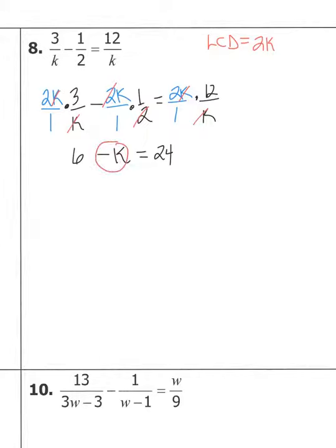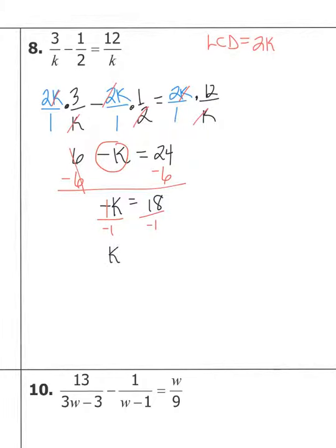To solve for k: subtract six from both sides. Negative k equals 18. The coefficient of k is technically negative one, so divide both sides by negative one. K equals negative 18. Check restrictions: since k is a monomial in the denominator, k cannot equal zero. Our answer negative 18 is not zero, so it's a good solution.